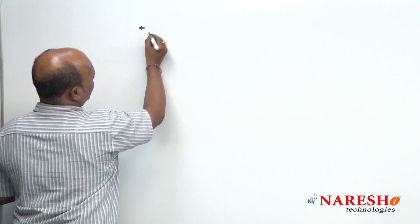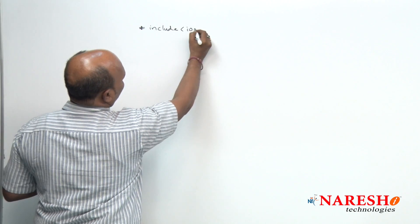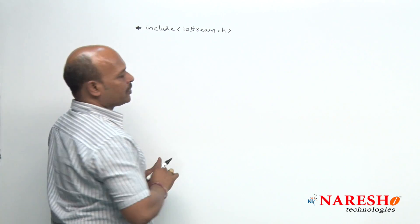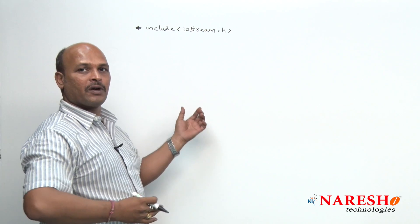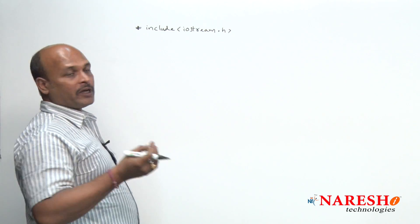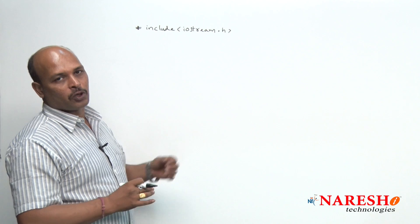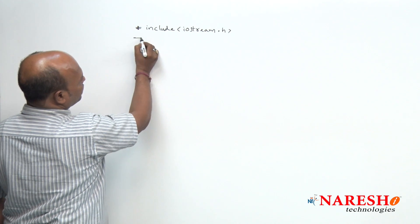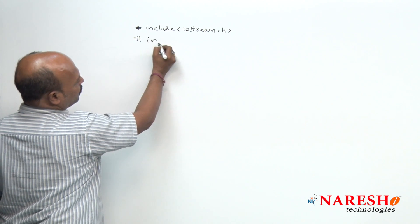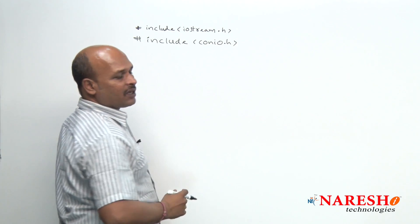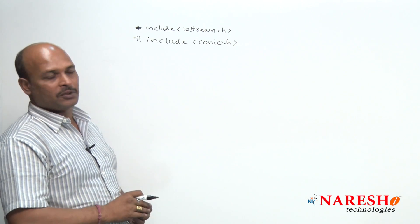For example, I am going to write one base class. Hash include iostream.h — it is the basic header file for input output operations. Next, hash include conio.h for CLRSCR and getch in our program.